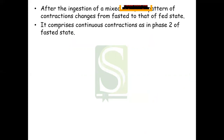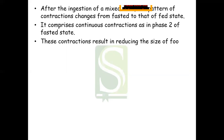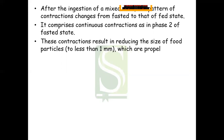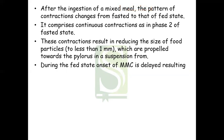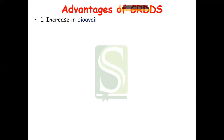After ingestion of a mixed meal, the pattern of contraction changes from the fasted to the fed state. Fed state contractions are continuous contractions similar to phase two of the fasted state, reducing food particle size to less than one millimeter, propelling them toward the pylorus in suspension form. During the fed state, onset of MMC is delayed, resulting in a slowdown of gastric emptying rate.